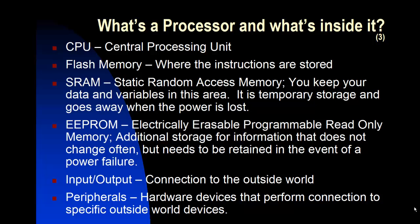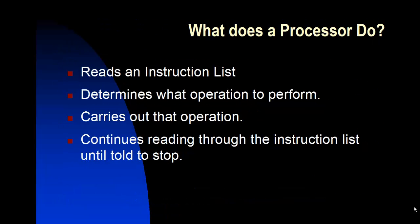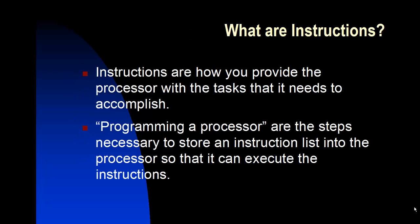A processor goes through an instruction list, commonly referred to as a program. It reads that instruction list, determines what operation to perform, carries out that operation, and continues reading through the list until told to stop. Many times a program will run through all its instructions, and the next instruction at the end is to repeat from the beginning — so the processor repeats through that list over and over again until the power goes out or some external event tells it to stop.